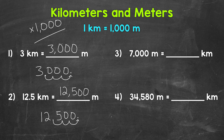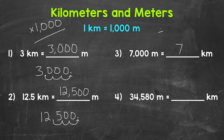Let's move on to number 3, where we have 7,000 meters equals how many kilometers. Each group of 1,000 meters equals a kilometer. So how many thousands are in 7,000? In other words, 7,000 divided by 1,000. That gives us 7,000 meters equals 7 kilometers. So when we go from meters to kilometers, we divide by 1,000.